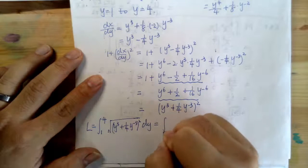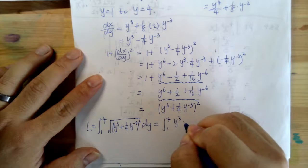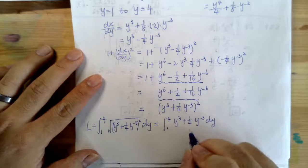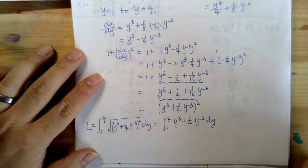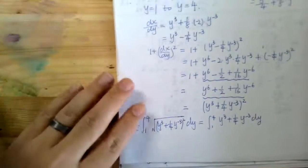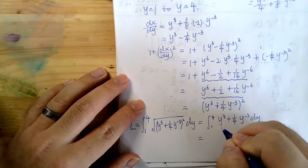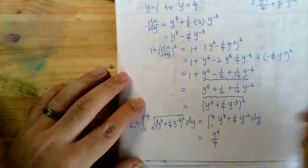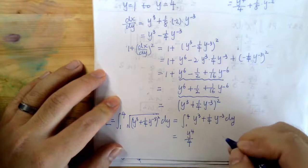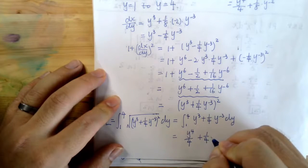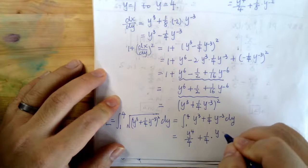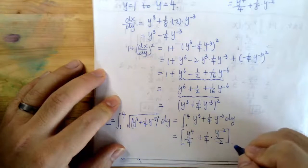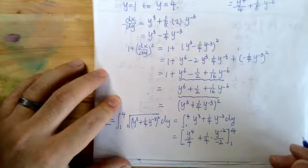So the integral from 1 to 4 becomes the integral of (y³ + (1/4)y⁻³) dy. This definite integral is straightforward. The antiderivative of y³ is y⁴/4, and the antiderivative of (1/4)y⁻³ is (1/4)·y⁻²/(−2) = −1/(8y²). We evaluate from y = 1 to y = 4.